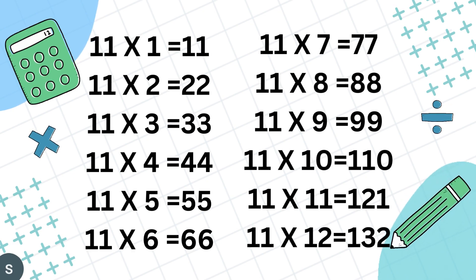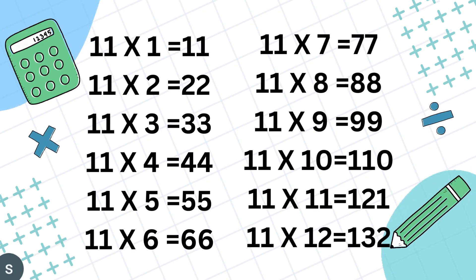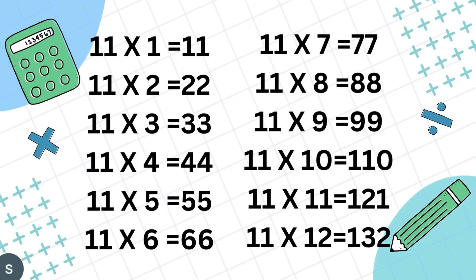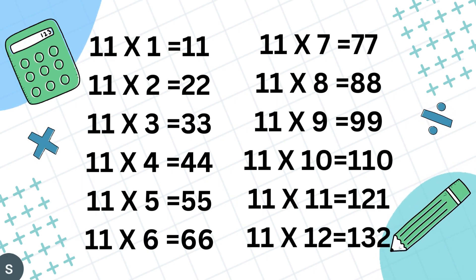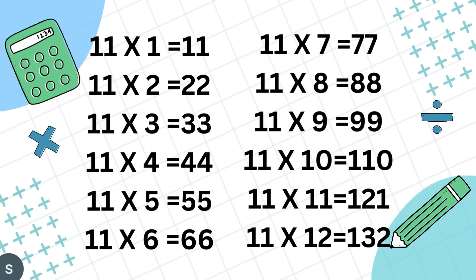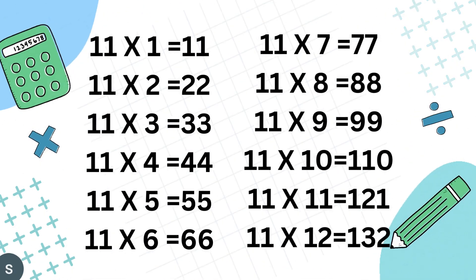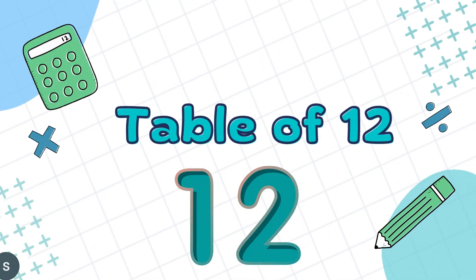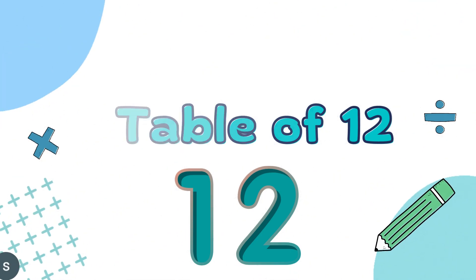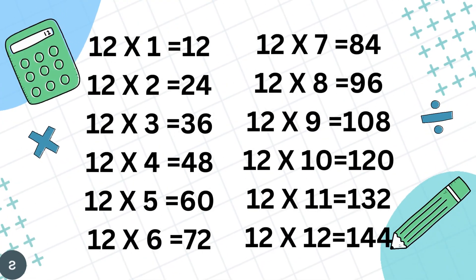11 7's are 77, 11 8's are 88, 11 9's are 99, 11 10's are 110, 11 11's are 121, 11 12's are 132.